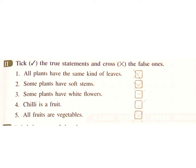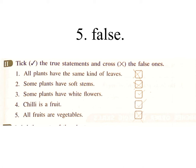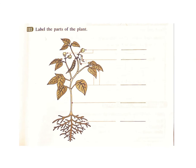Tick the true statements and cross the false ones. One: All plants have the same kind of leaves — False. Two: Some plants have stems — True. Three: Some plants have white flowers — True. Four: Chili is a fruit — True. Five: All fruits are vegetables — False.